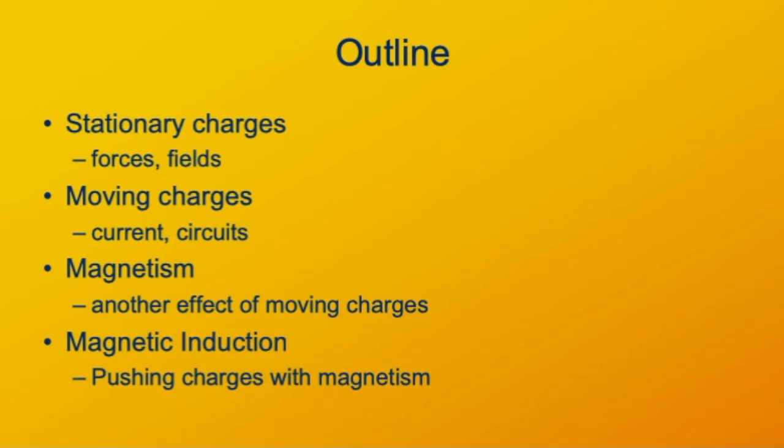First, moving charges as flowing charges that create an electric current, which can then be used in a circuit to drive electronic devices and machines, which is a major part of our current technology. Then we move into magnetism, which is another effect of electric current. Magnetism is an electric phenomenon. And then we'll conclude bringing everything full circle: magnetism interacts with electricity by what we call electromagnetic induction.